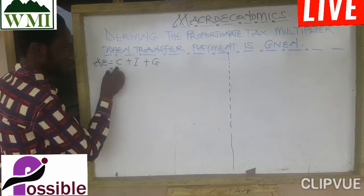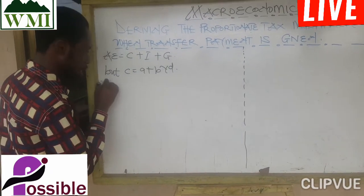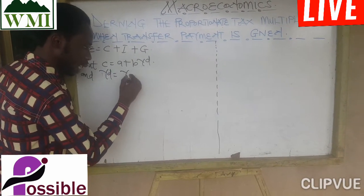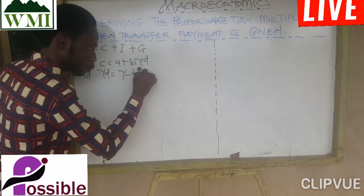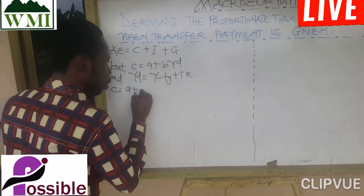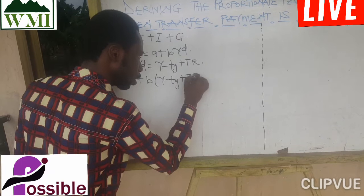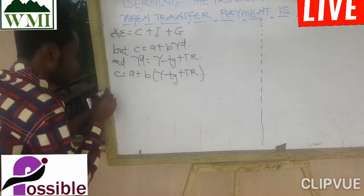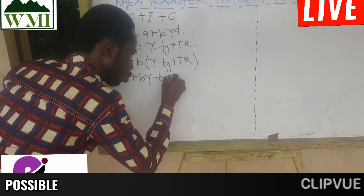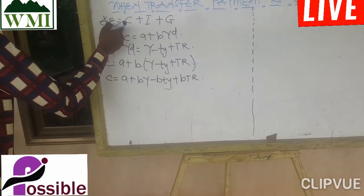We have C equal to a plus b times Yd, and Yd is equal to Y minus tY plus TR (transfer payment). So C equals a plus b times (Y minus tY plus TR), which expands to C equal to a plus bY minus bTY plus bTR.